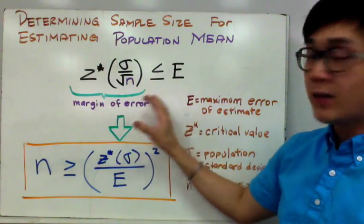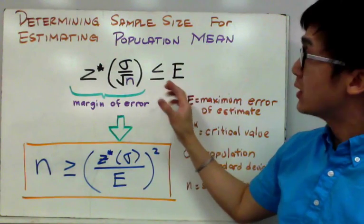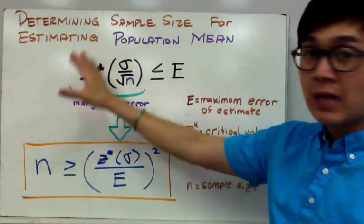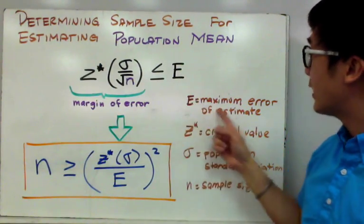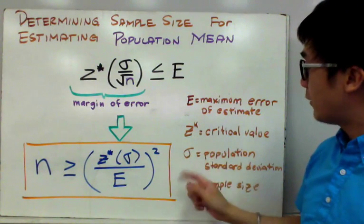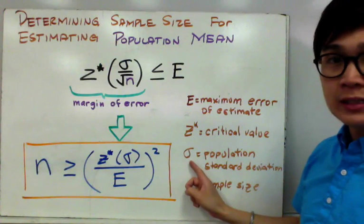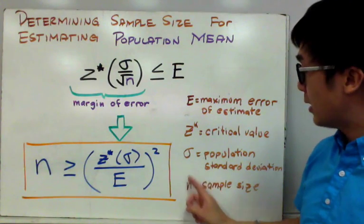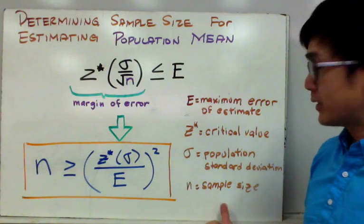We are going to derive our formula in determining the sample size based on our margin of error, where E is the maximum error of estimate, z star is your critical value, your population standard deviation is denoted by sigma, and the small letter n is your sample size.